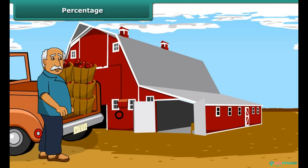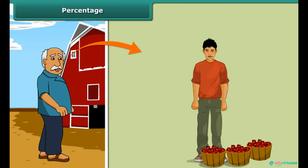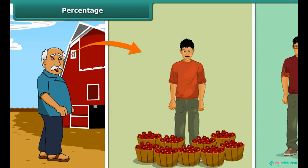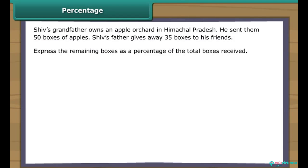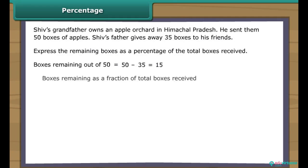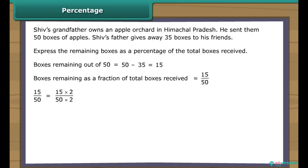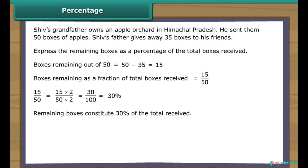Shiv's grandfather sent them 50 boxes of apples. Shiv's father gives away 35 boxes to his friends. Let us express the remaining boxes as a percentage of the total. Boxes remaining equals 50 minus 35, which equals 15. As a fraction: 15 upon 50. Converting the denominator to 100: 15 × 2 upon 50 × 2 equals 30 upon 100, which equals 30%. Remaining boxes constitute 30% of the total received.